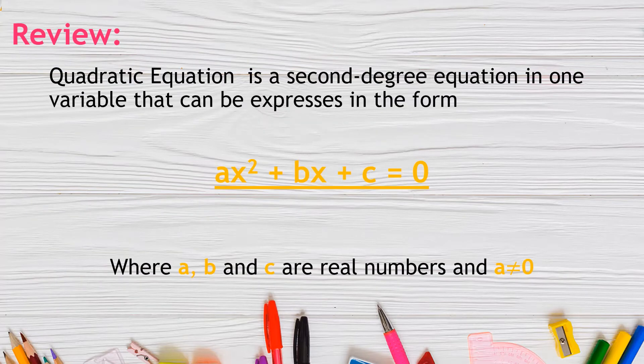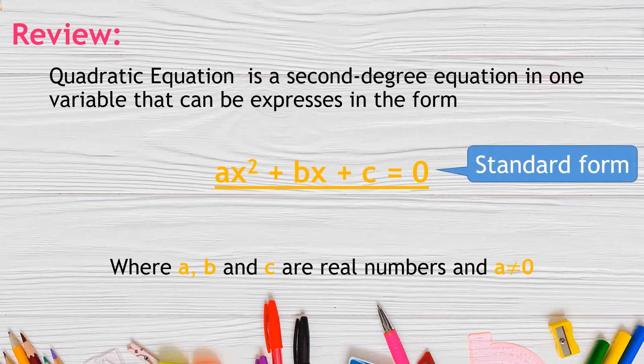In the previous video, we discussed that a quadratic equation is a second-degree equation in one variable that can be expressed in the form ax² + bx + c = 0, where a, b, and c are real numbers and a must not be equal to 0. Take note that ax² + bx + c = 0 is the standard form of the quadratic equation.